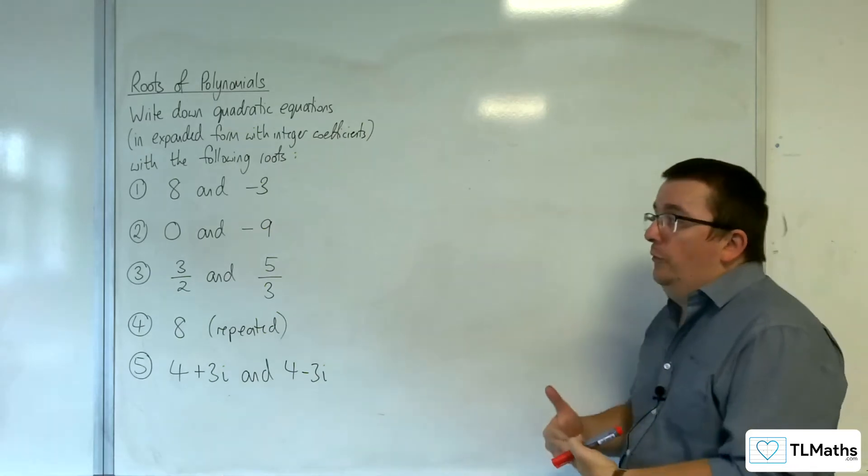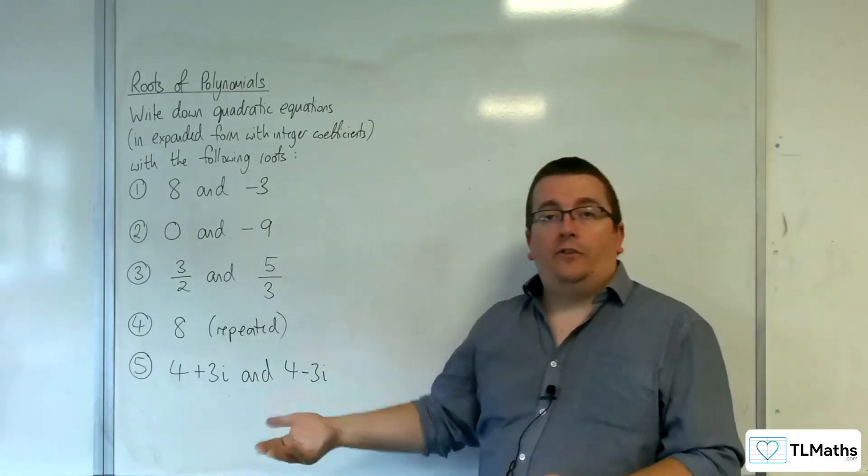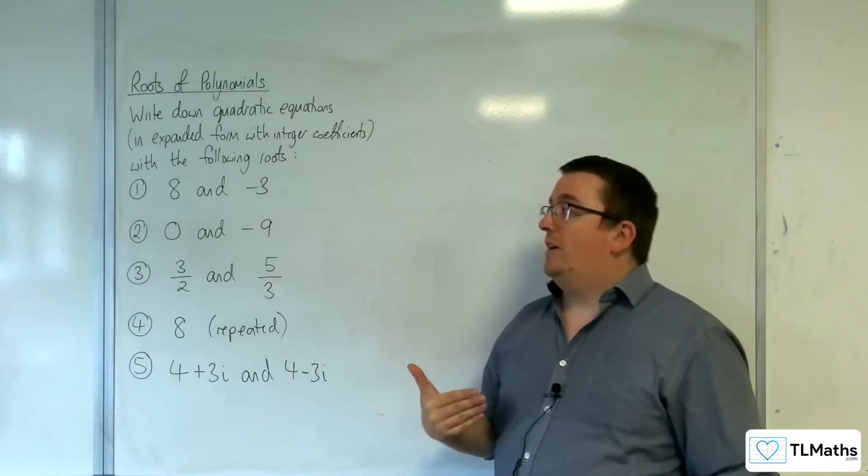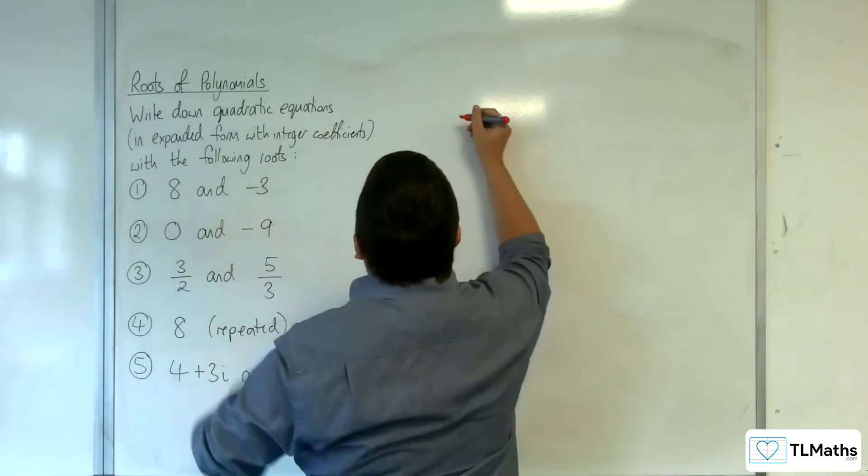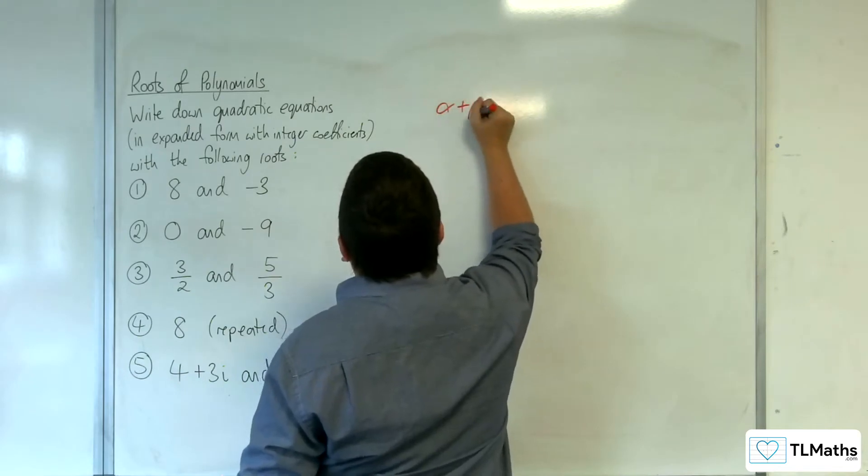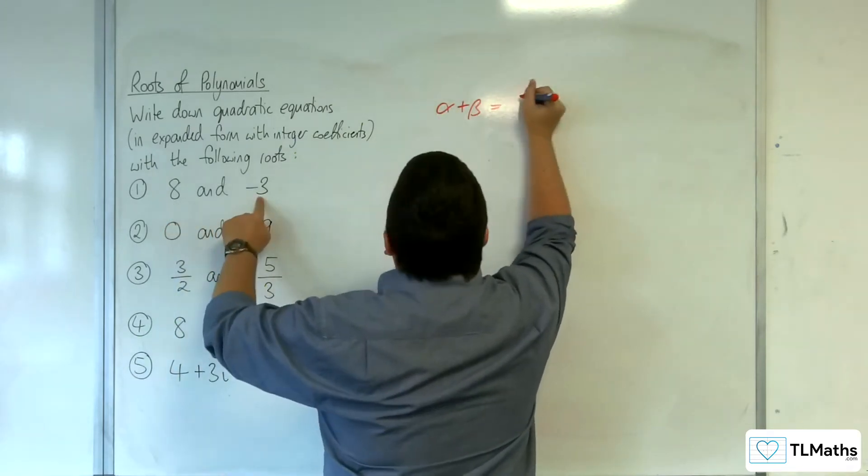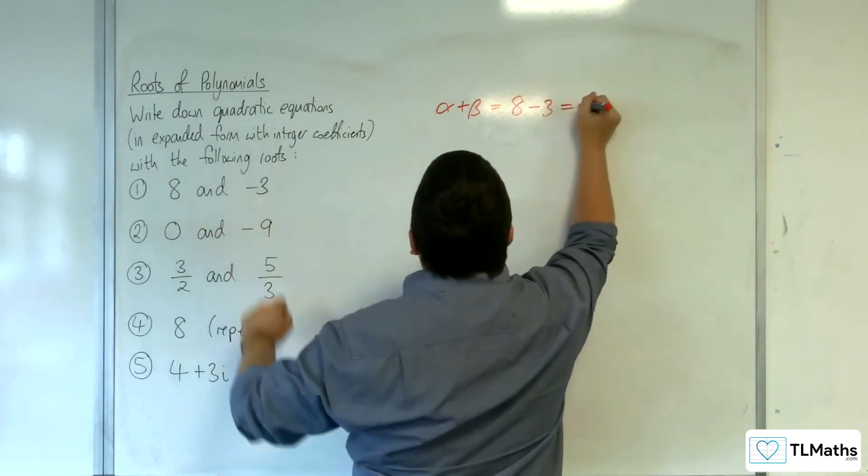Now, we want to use our understanding of the sum and product of the roots and how they relate to the quadratic equation. So for the first one, we've got the sum of the roots, so alpha plus beta is 8 take away 3, so 5.